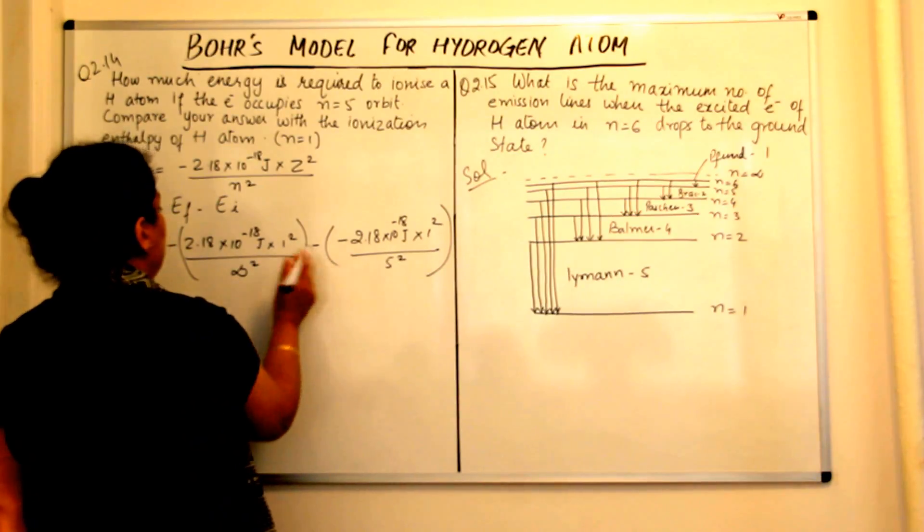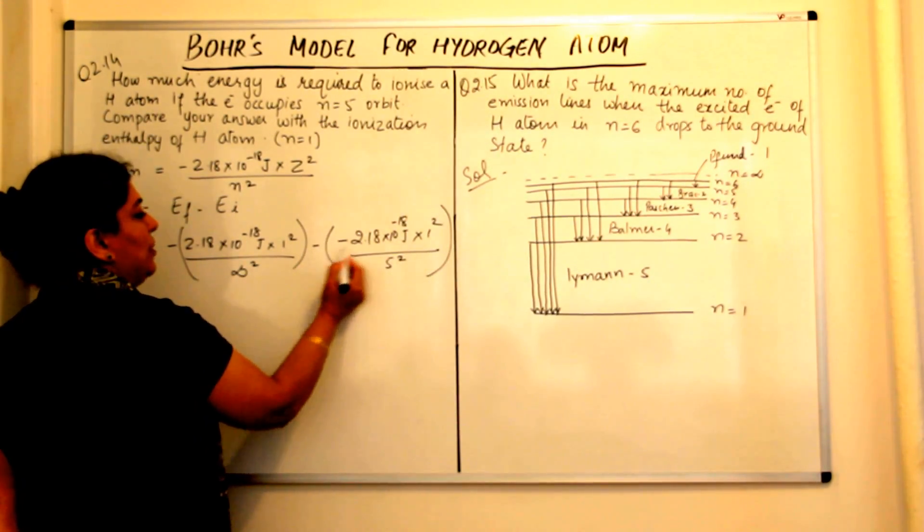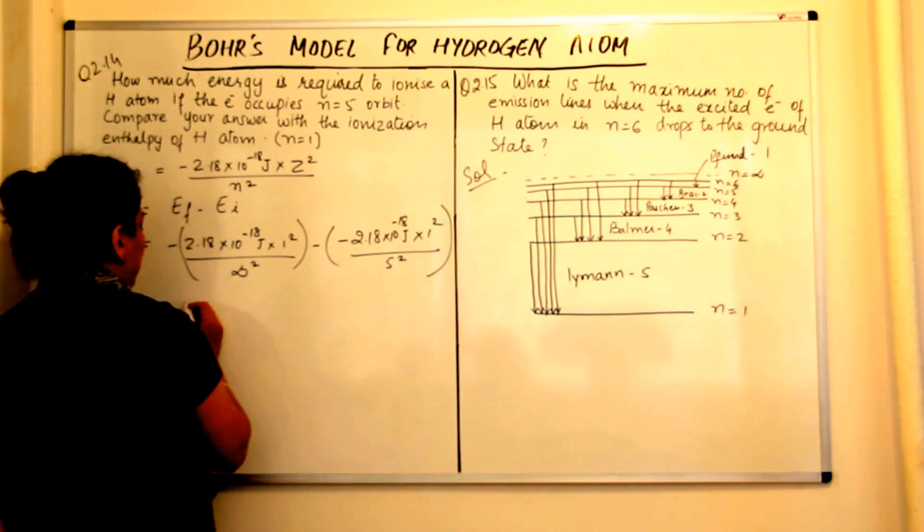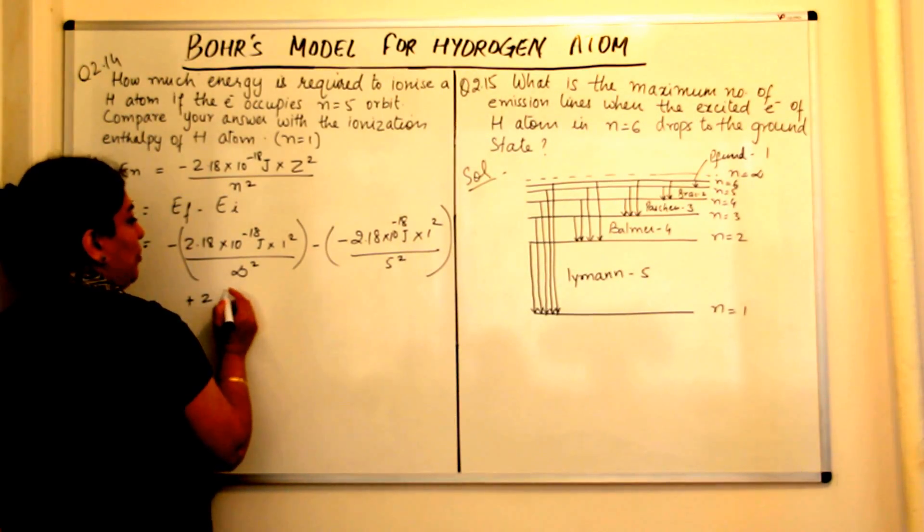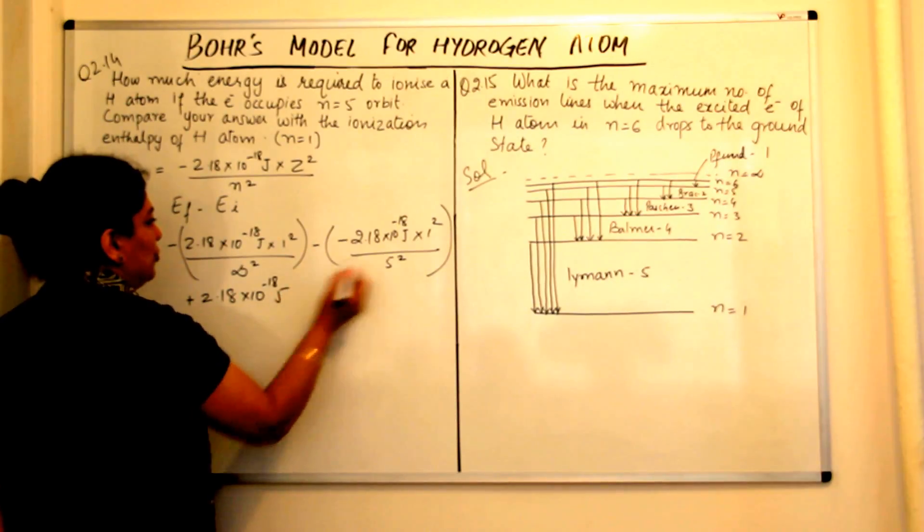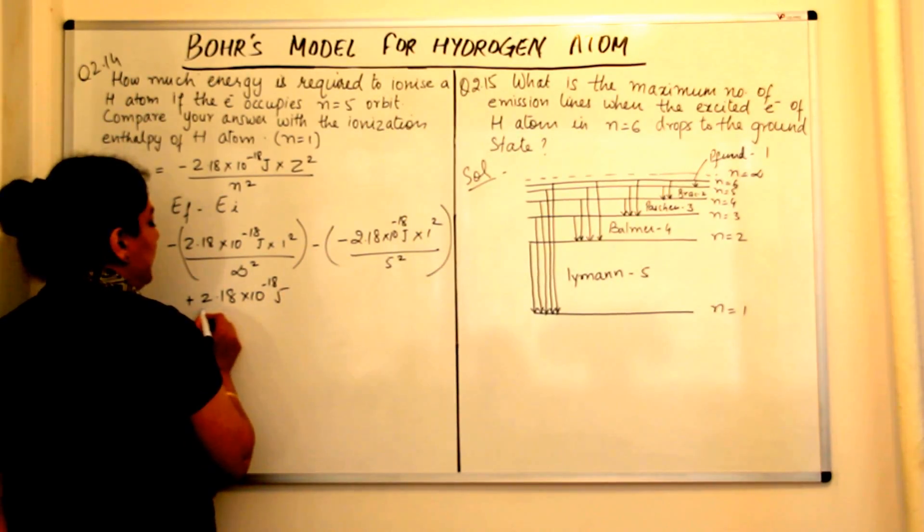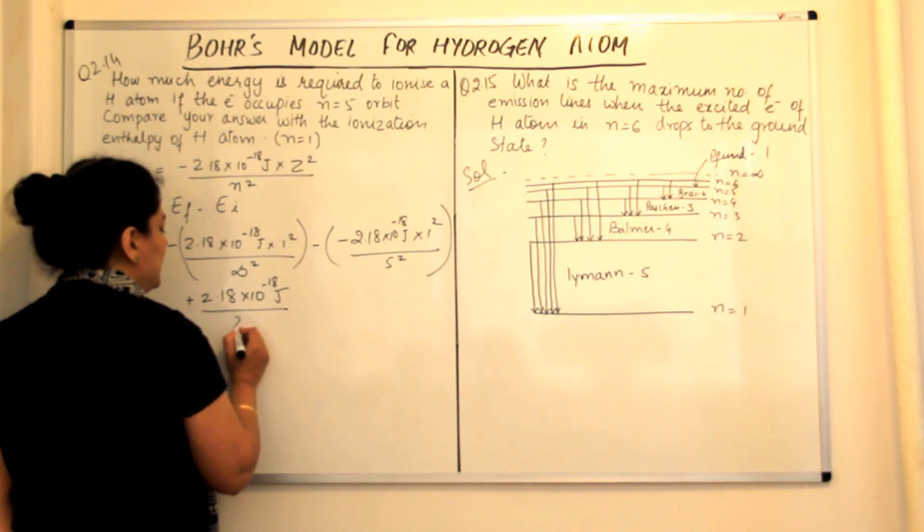So you are left, if this is 0, minus minus of this would be plus, so we just have to calculate this. Minus minus becomes plus, therefore this is a positive 2.18 into 10 to the power minus 18 joules. You can ignore the one square because its value is 1, upon 5 square is 25.